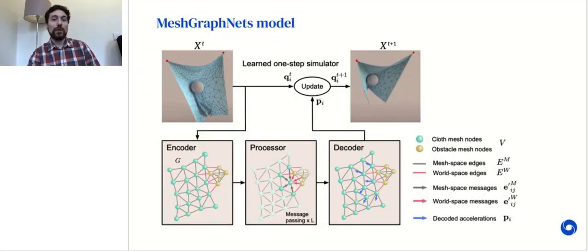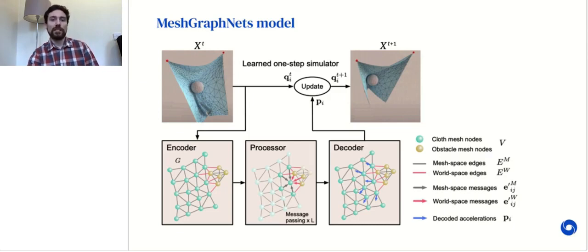Our new model extends the previous one to work with meshes. Like our previous model, it follows an encode-process-decode approach. Let's look at this example of a cloth interacting with a sphere. The encoder builds the input graph representing the state of the cloth and the sphere. In this case, the state is already in a mesh, which is essentially already a graph with nodes and edges. However, the mesh edges alone may not be optimal for message passing.